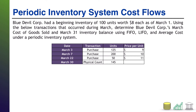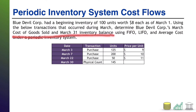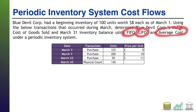Blue Devil Core had a beginning inventory of 100 units worth $8 each as of March 1. Using the below transactions that occurred during March — March 3rd, 7th, and 22nd are all purchase transactions, and then a physical count that occurred on March 30th — determine Blue Devil Core's March cost of goods sold and March 31 inventory balance using FIFO, LIFO, and average cost under a periodic inventory system.